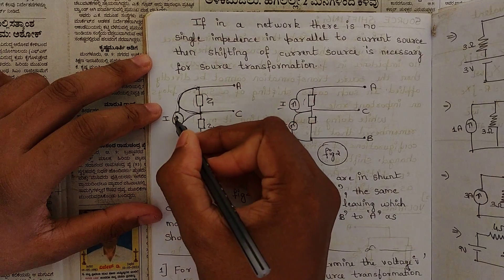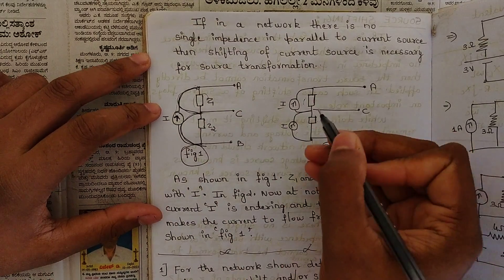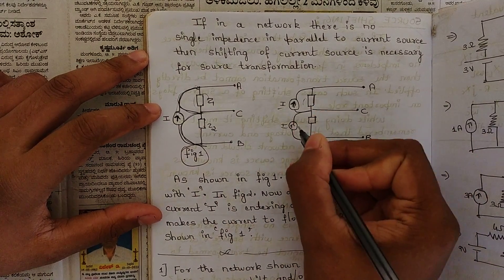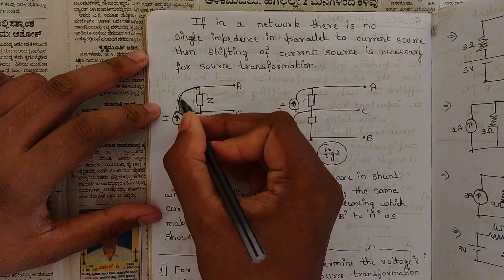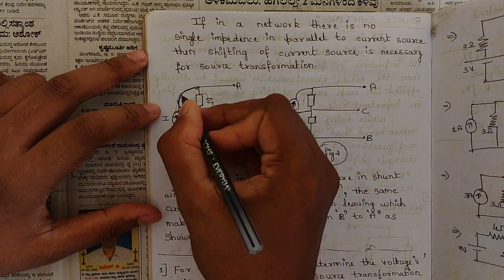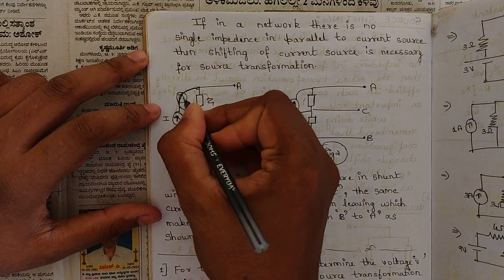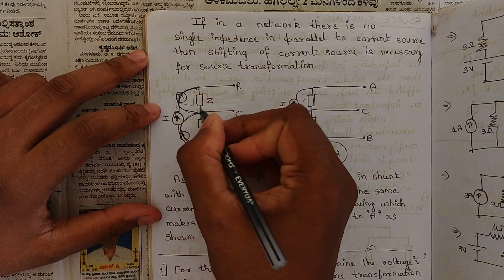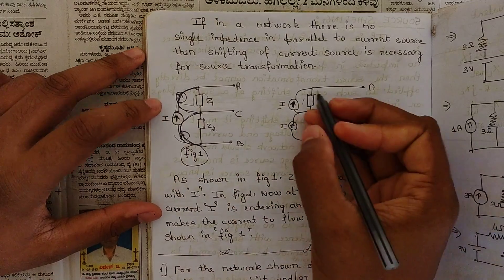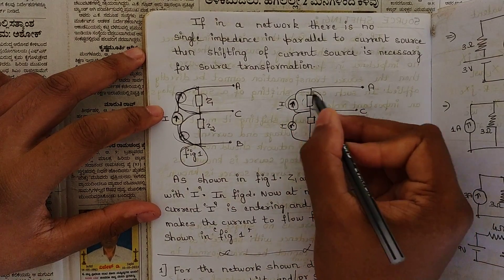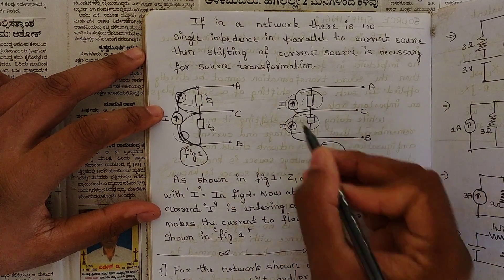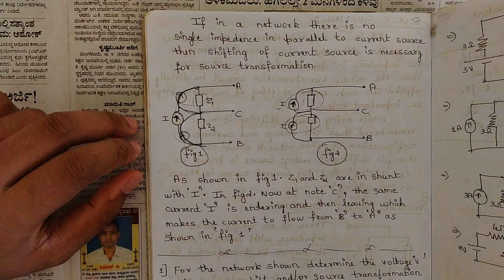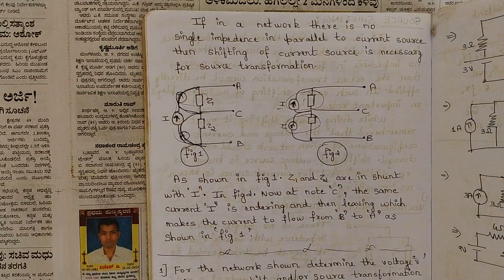Keeping in mind the direction — the direction should not be changed and the value of current also should not be changed. So like this it is shifted, satisfying the condition that it should be in parallel with the resistance. This is the simple current source shifting.